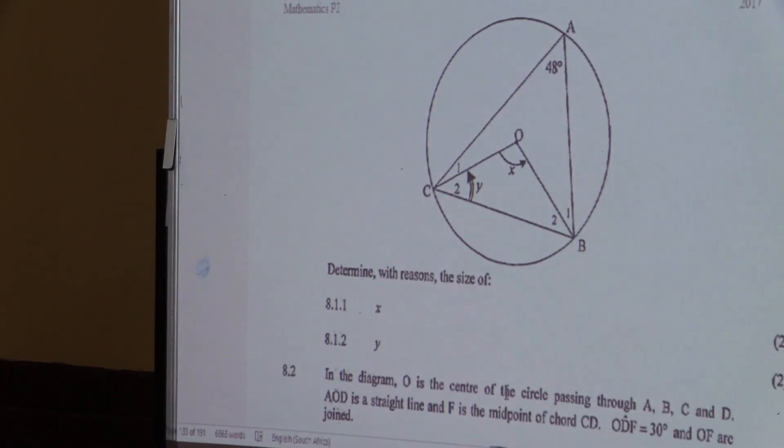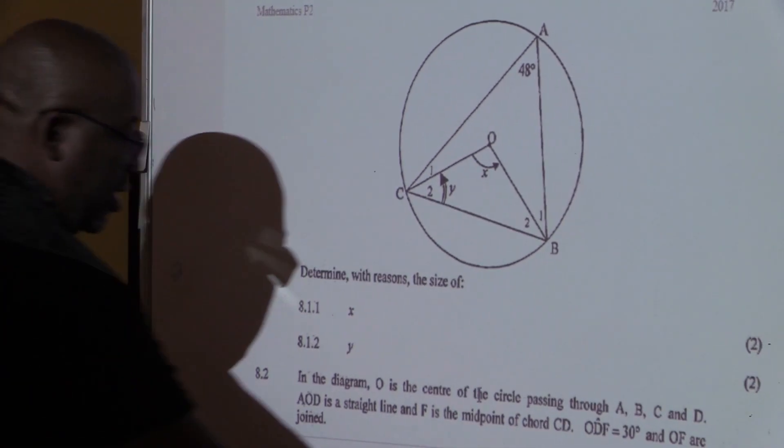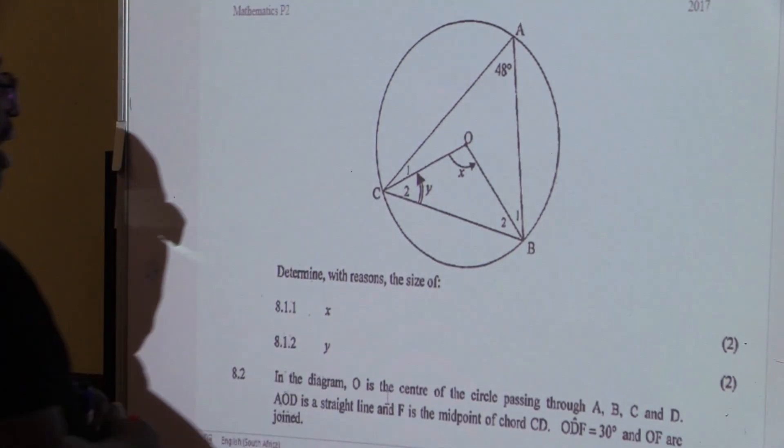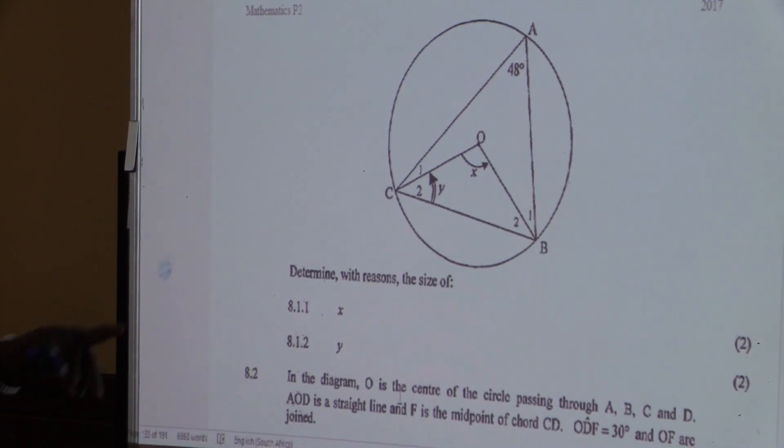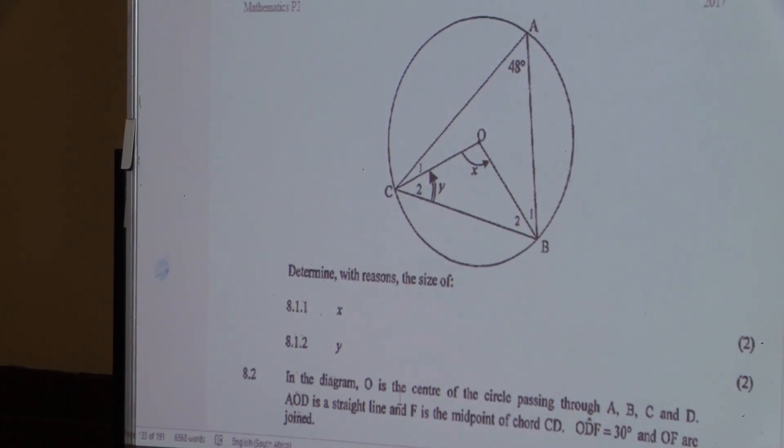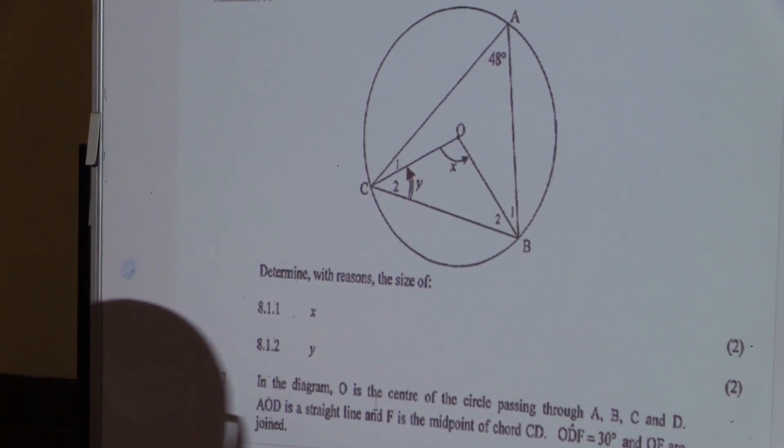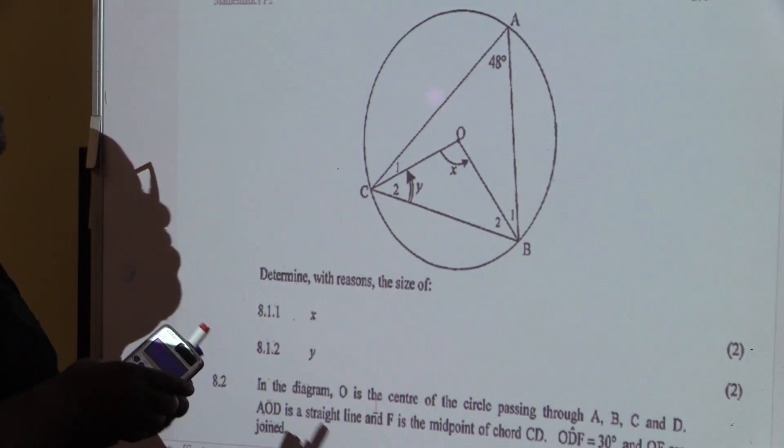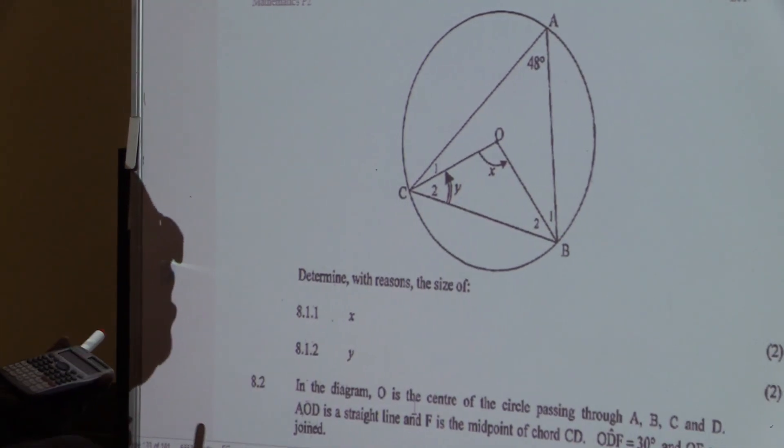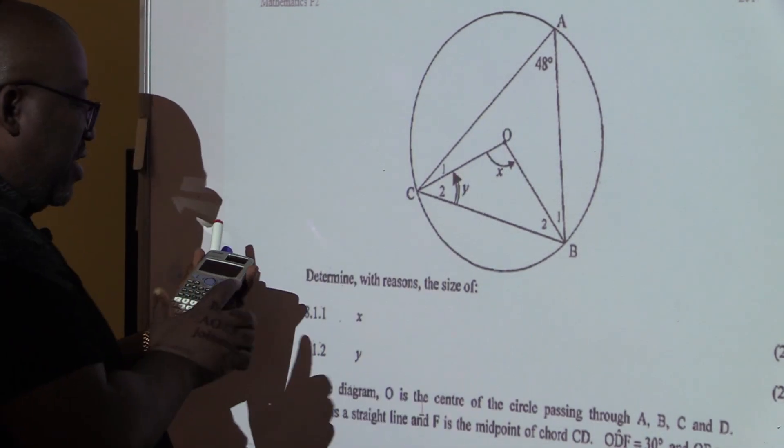That's what we are given. Let's look at the questions. There are only two questions that I want us to do, and then take a break. Determine with reason the size of angle X. Where is angle X? Angle X is at the center, but I'm given the angle at the circumference. And this one is two times bigger than that one.